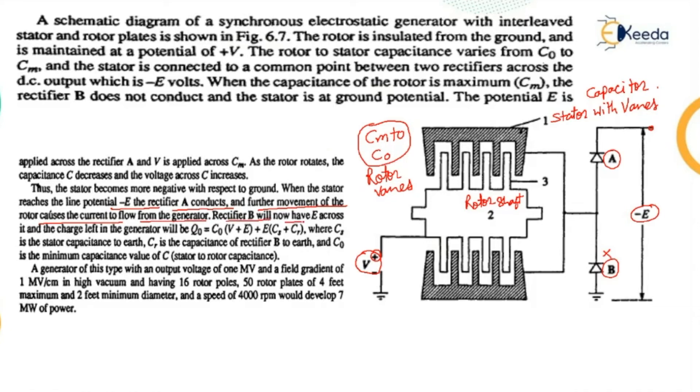Rectifier B will now have E across it and the charge left in the generator will be Q0, which is C0 times (V plus E) plus Cs plus Cr, where Cs is the stator capacitance to earth and Cr is the capacitance of rectifier B to earth, where C0 is the minimum capacitance value of C, that is stator to rotor capacitance.